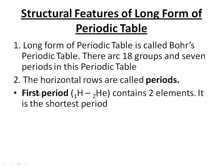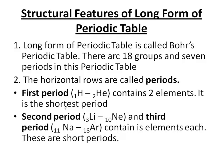The arrangement of elements in horizontal rows is called periods. The first period is the shortest period containing hydrogen and helium. The second period includes elements from lithium (atomic number 3) to neon (atomic number 10), and the third period consists of elements from sodium (atomic number 11) to argon (atomic number 18). Both the second and third periods contain eight elements each and are called short periods.